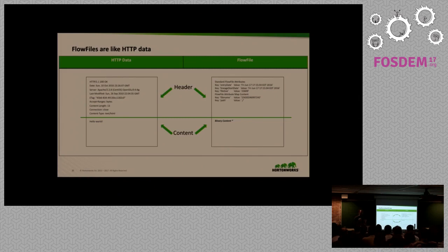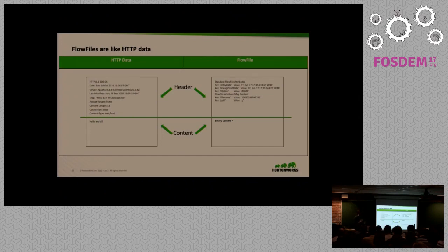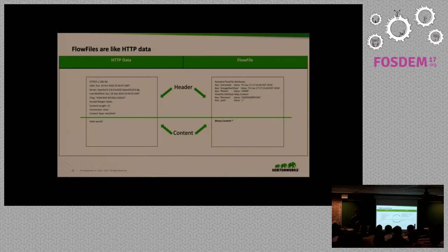We've split this into two storage capacities. One is the flow file repository, which stores all flow files with their attributes but has a reference pointer — a claim — to content in a content repository. Everything is dealt with through streaming interfaces; the content is read into a content repository and referenced from there, so it's not always on the heap, whereas attributes are always available. This allows NiFi to process a ton of data very quickly.